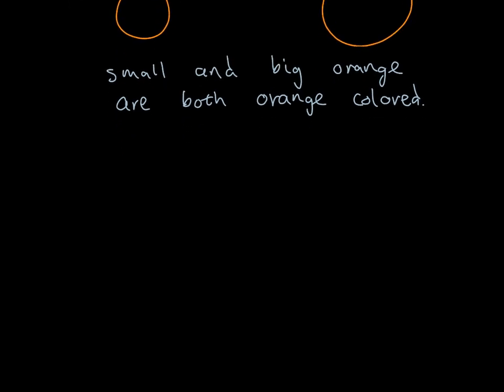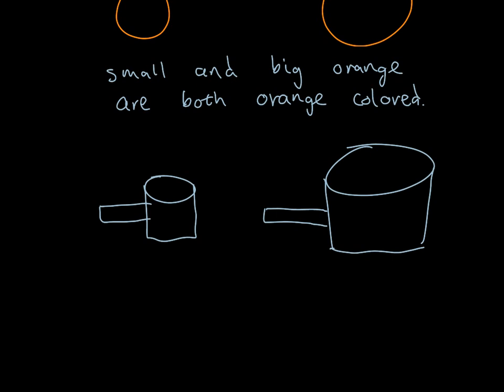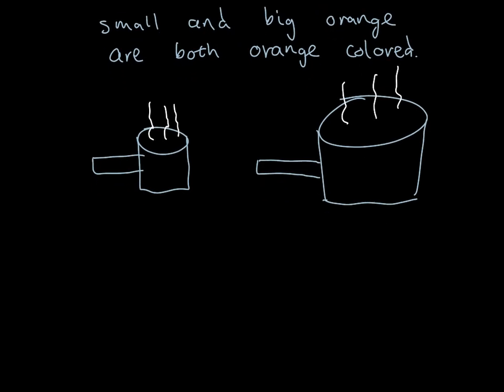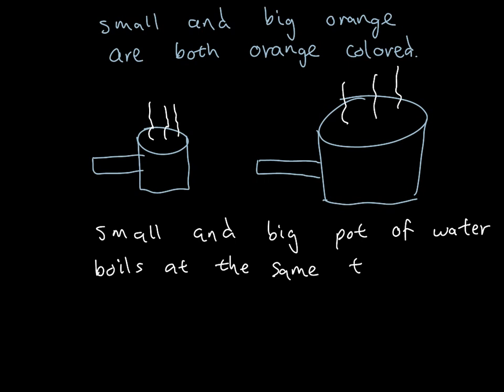And one more example I'm going to draw is a pot of water. So I'm going to have a small pot of water—yes, it's beautiful—and a really big pot of water. I should have changed color, but it's okay. So the water that's inside, let's make it boiling right now. So the water is turning into steam, turning into a gas. I'm going to write: small and big pot of water boils at the same temperature, 100 degrees Celsius.